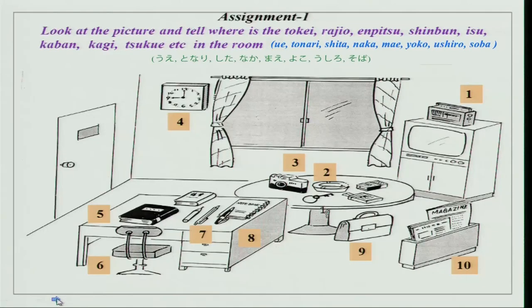The first assignment is: look at the picture and tell where is the tokei, rajio, enpitsu, shimbun, isu, kaban, kagi, tsukue in the room. This picture is of a room where there are a lot of objects, and you have to tell exactly where they are. Last time we had done locational nouns and this is the exercise for that — you have to tell where exactly these things are.